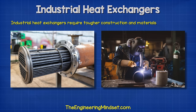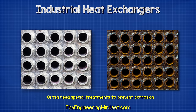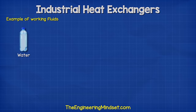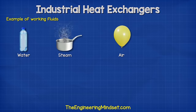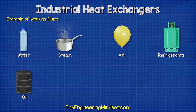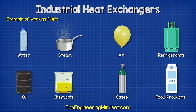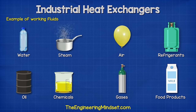Therefore, these units are built sturdier and from more robust materials. The working environments are often corrosive, so they are chemically treated to handle this. These heat exchangers will handle fluids such as water, steam, air, refrigerants, oil, chemicals, gases, food products, and more.